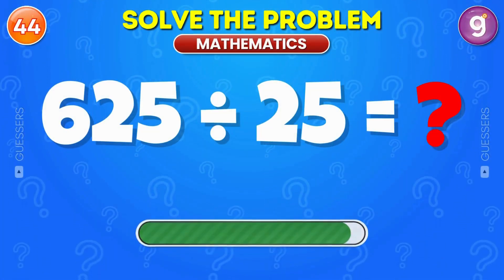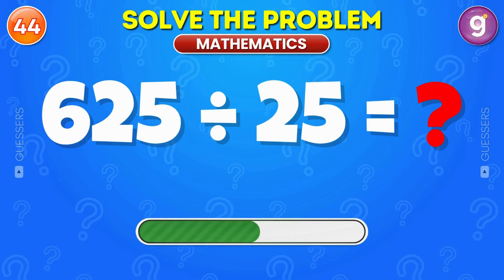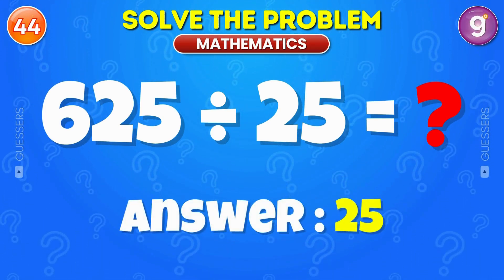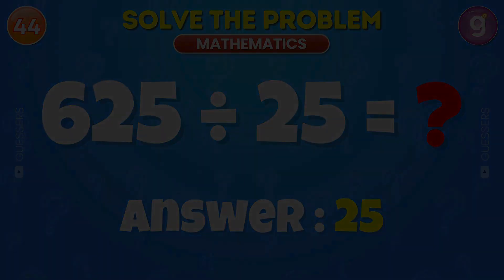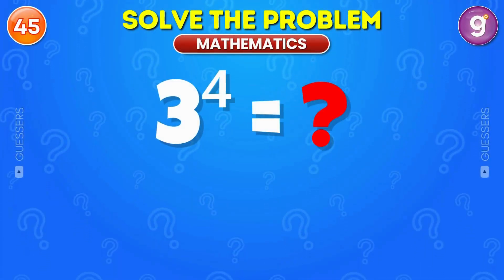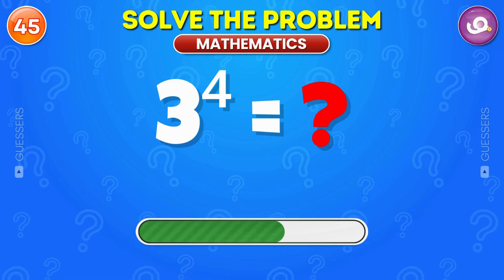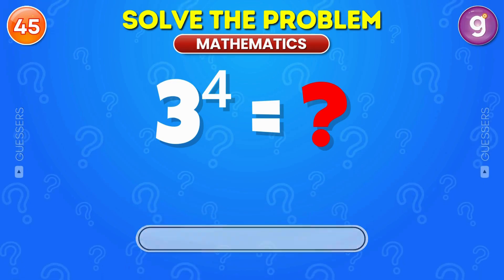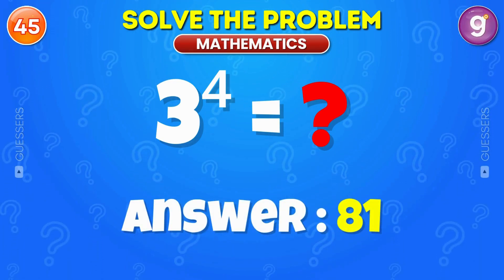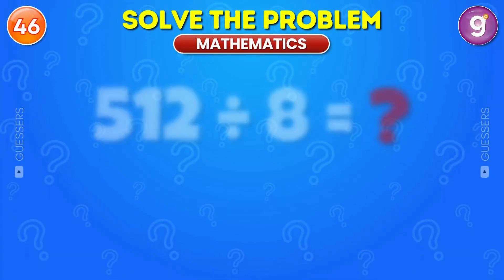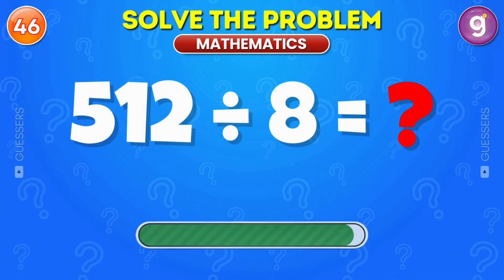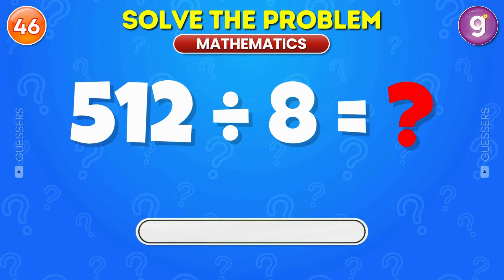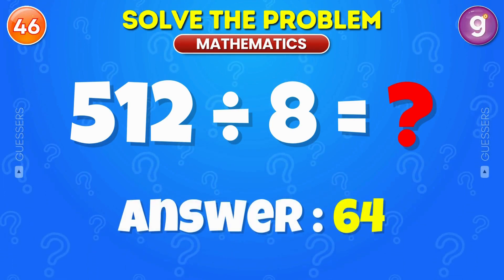Divide 625 by 25. The answer is 25. Evaluate 3 to the power of 4. It's 81. Divide 512 by 8. The answer is 64.